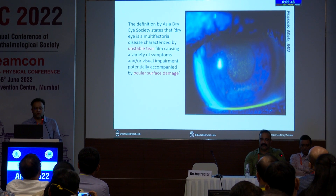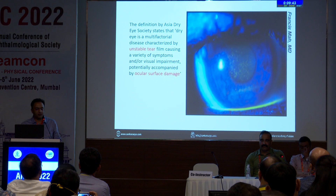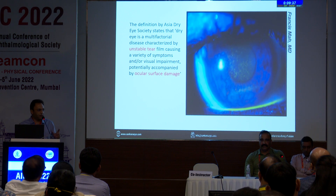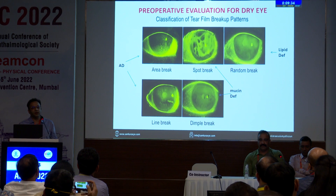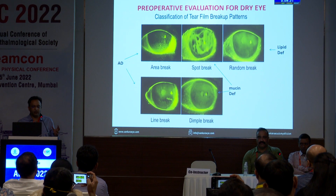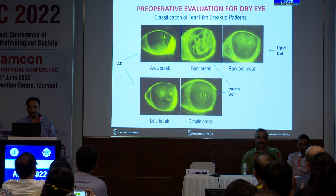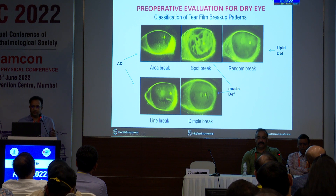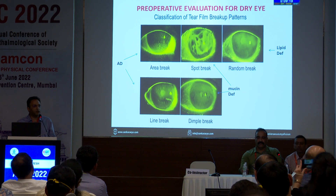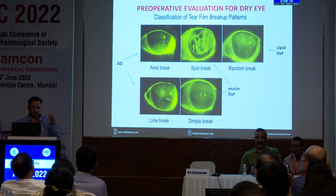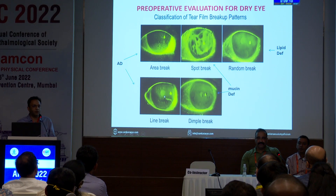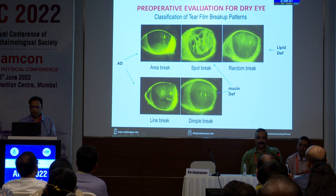They have now come up with a new classification based on the instability of the tear film and the amount of ocular surface damage. Luckily, you don't need any fancy instruments, including osmolality measurements. They are classifying dry eye based on the tear film breakup patterns. If you see an area breakup or a line breakup, it is aqueous deficiency. A spot breakup or a dimple breakup is mucin deficiency, and a random break is lipid deficiency.